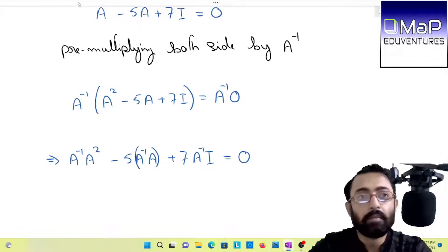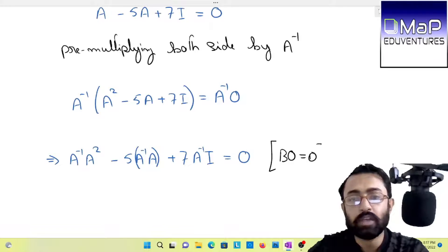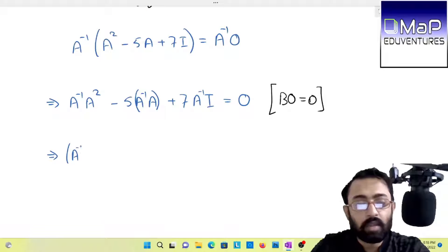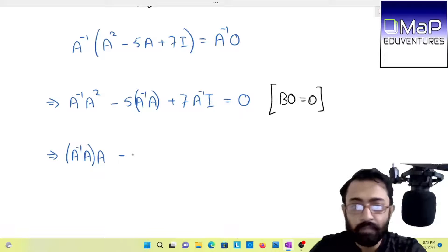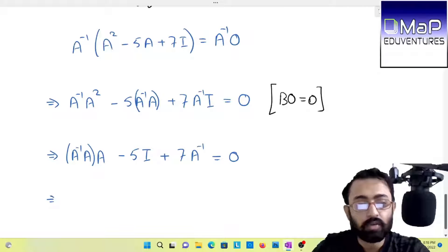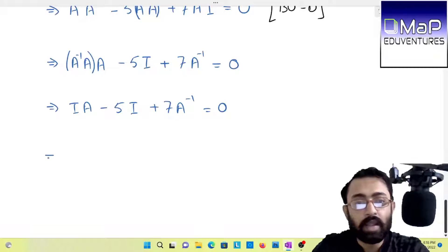Now we know that multiplication of any matrix with 0 matrix will give you 0 matrix. A inverse into A, you will get the identity matrix, and again A inverse into identity matrix will give you A inverse equals to 0 matrix. Finally, A inverse almost stepped out. Now do one thing, keep 7A inverse on the left-hand side and take the remaining two terms on the right-hand side.